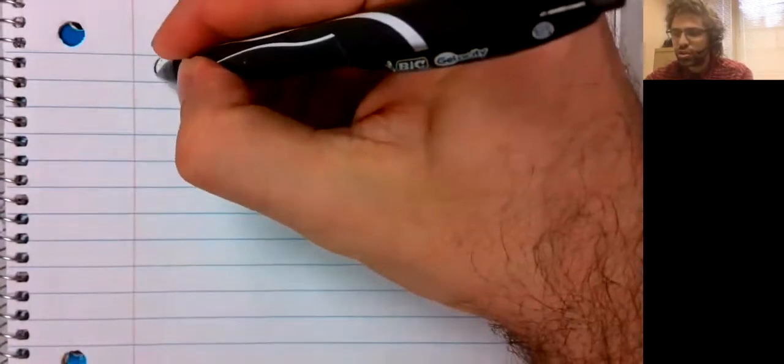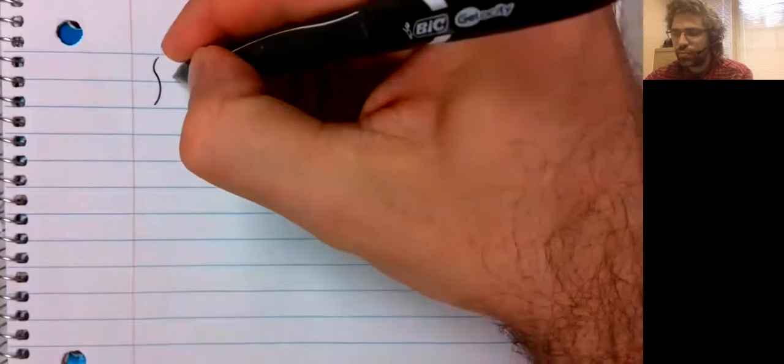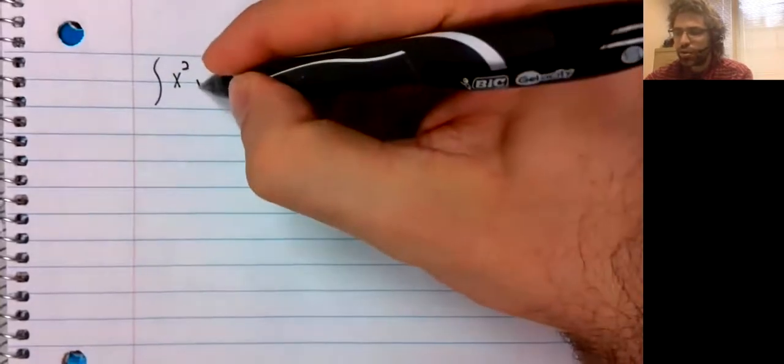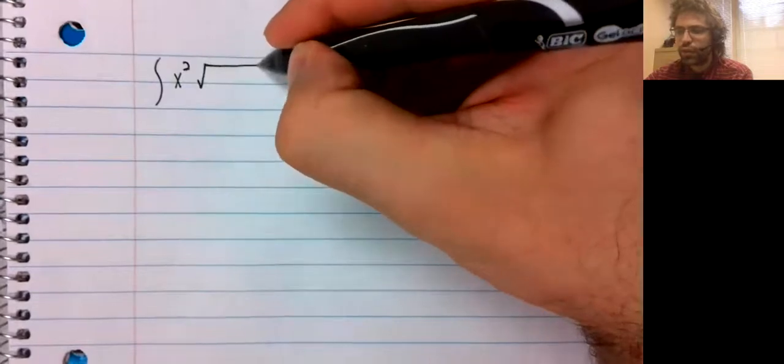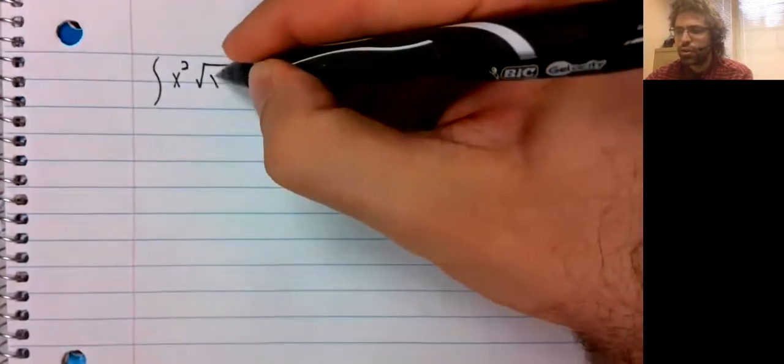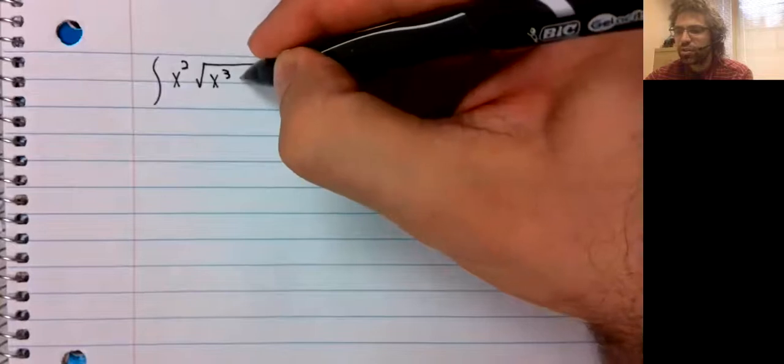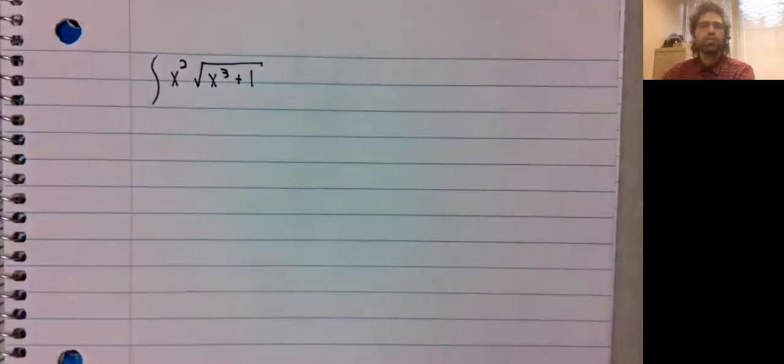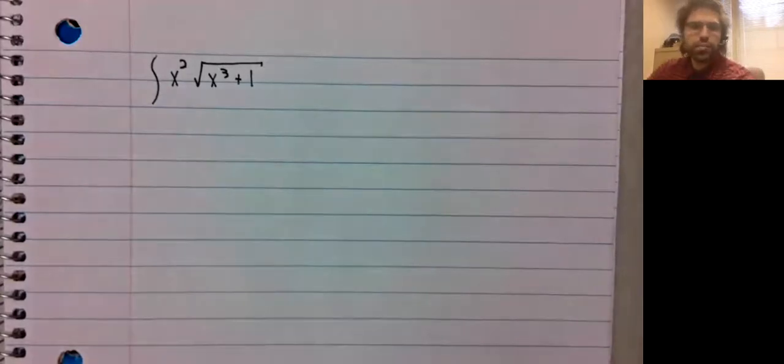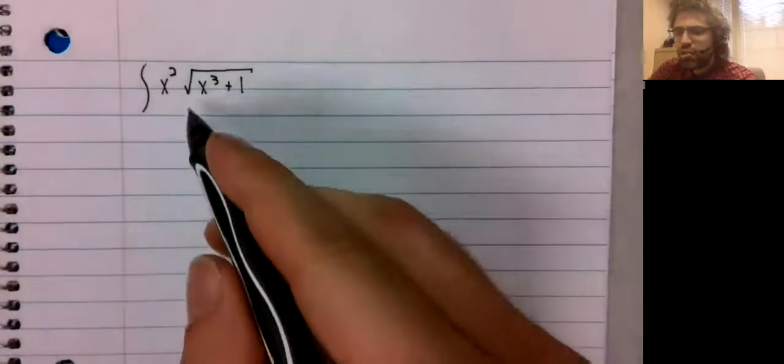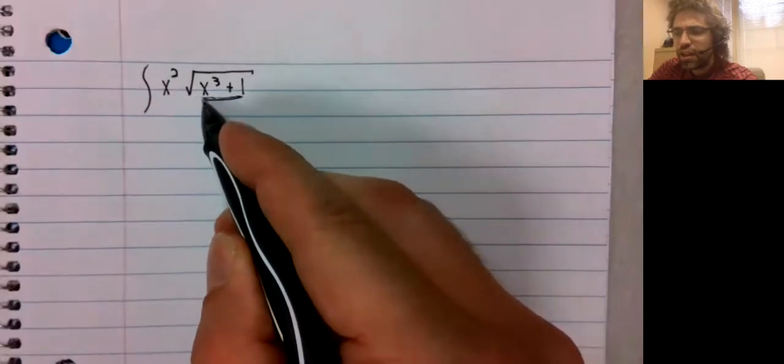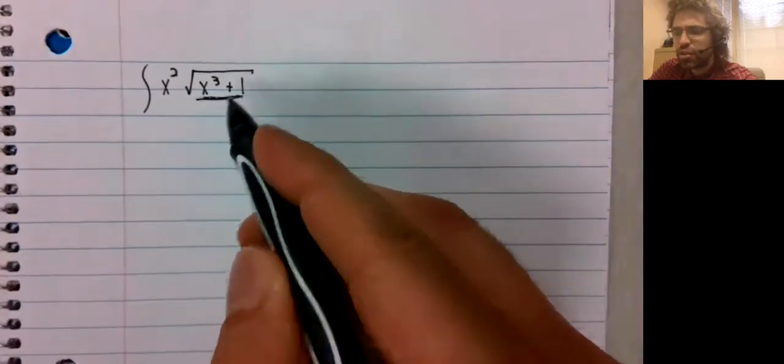Let's integrate x squared times the square root of x cubed plus one. You have a composition here, the square root of an inside function.